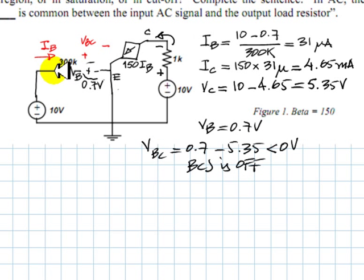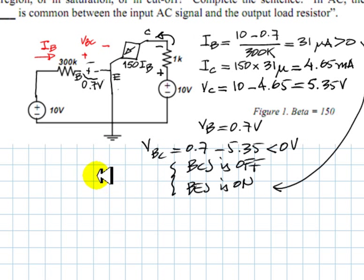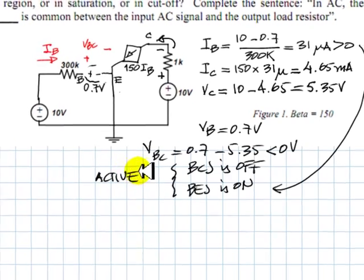which means that the base-collector junction is off. Because the current in the base is positive, as we computed before, that signifies that the base-emitter junction is on. These are the conditions for an active or linear mode of operation.